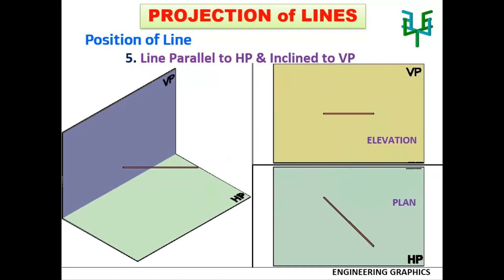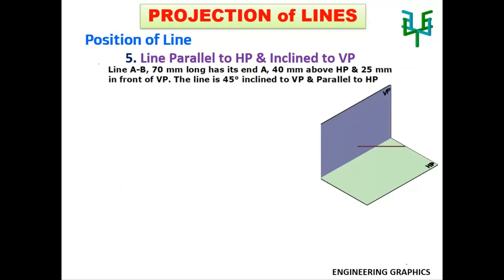The next case is line parallel to HP and inclined to VP. The line is inclined to VP, so this inclination can be seen in the plan. The line is parallel to HP, so the elevation is a line parallel to the XY line. Let us take a problem: A line AB, 70mm long, has its end A 40mm above HP and 25mm in front of VP. The line is 45 degrees inclined to VP and parallel to HP.